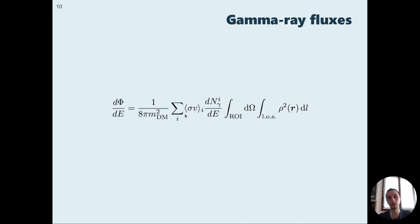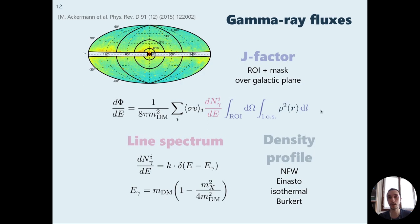We can recognize immediately the presence of the annihilation cross-section. Then we have the spectrum of photons, which for a line spectrum is basically delta-shaped, and here we can see that the energy of the photon is fixed by this relation, which depends on the mass of the particle that is produced along with the photon. Then we have the astrophysical input, which is encoded in this integral, which is called J-factor. This depends on the region of observation of the experiment, which may depend on the angle and also on the different masks that the experiment has placed on the galactic plane, for example. And of course, there is the dependence on the density profile of dark matter, which can be chosen between the different models, Navarro-Frank-White, and so on.